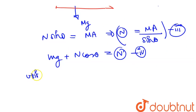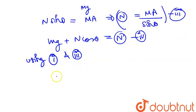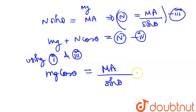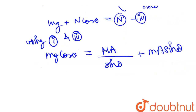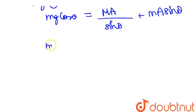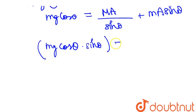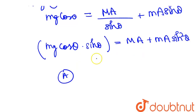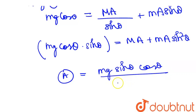Using equations 1 and 2: capital M into A over sin theta, plus small m·a sin theta. Simplifying: m·g cos theta times sin theta. This equals capital M into A plus small m into a. With A common in the expression: A = m·g sin theta cos theta over (capital M plus m sin squared theta).